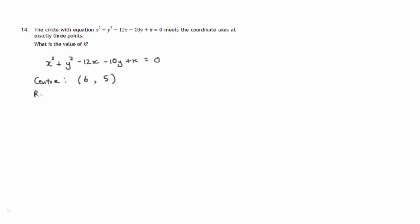The radius can then easily be got from the two coordinates of the centre by squaring them and adding them. 6 squared plus 5 squared. And then looking at the constant term and subtracting it. If this had been minus k, that would have been plus k. So that's your radius.